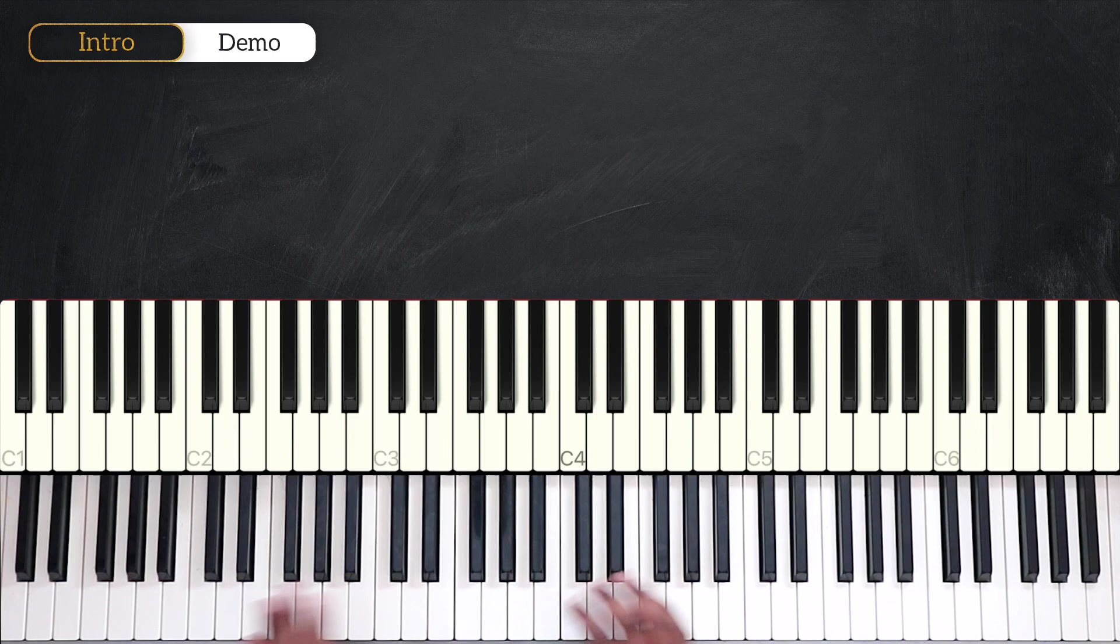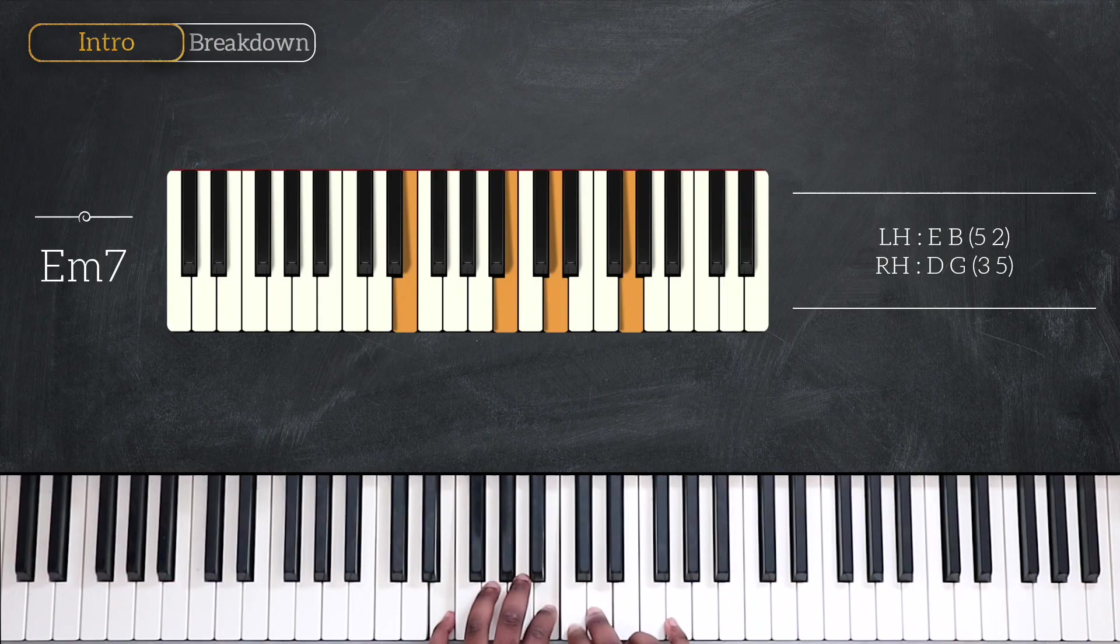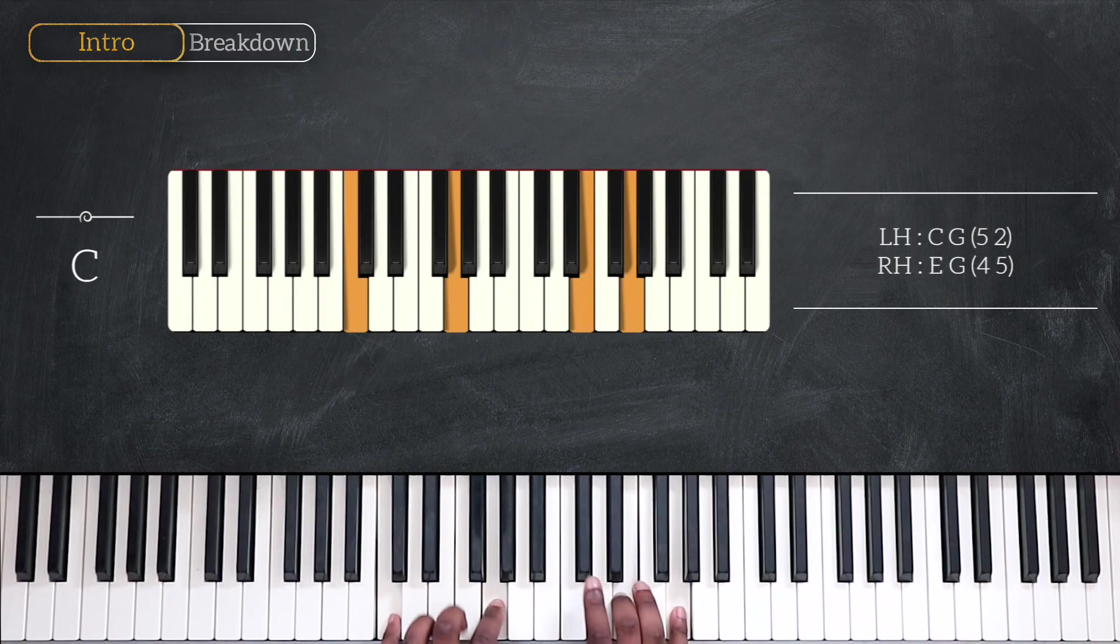For the chords of the intro we're starting with E minor 7. Playing two notes on each hand, E and B, D and G. Then we have C. C, G, E and G.